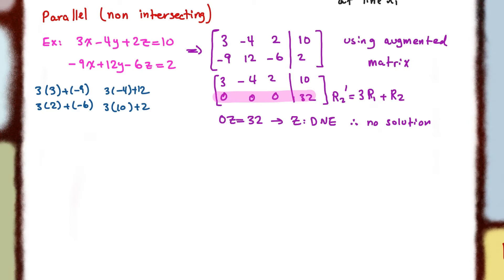You can also test this by looking at their normals — their normals will also be parallel. They will be a scalar multiple of each other if you were to check.